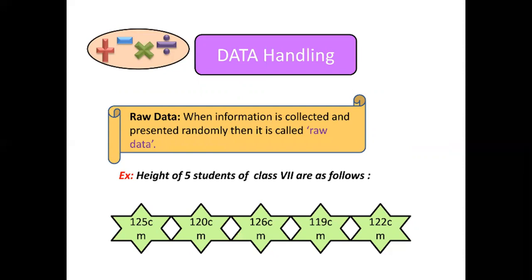For example, height of 5 students of class 7 are given below. 125 cm, 120 cm, 126 cm, 119 cm, 122 cm. This is said to be raw data because it is shown as such without any changes.